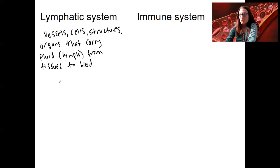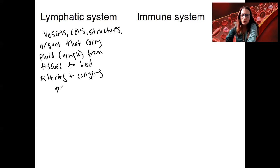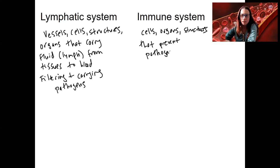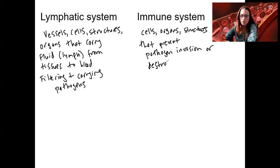When the lymph does this, the other part is that it's also filtering and carrying pathogens. The immune system, on the other hand, is cells, organs, and other structures that either prevent pathogen invasion — acting like a barrier — or destroy pathogens that are already in the body.